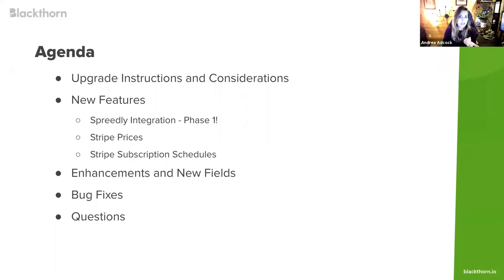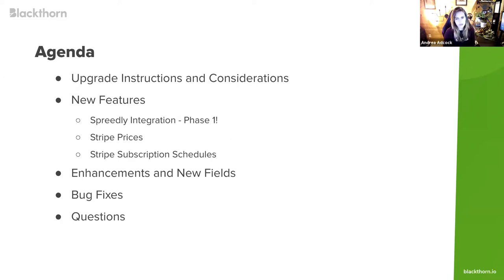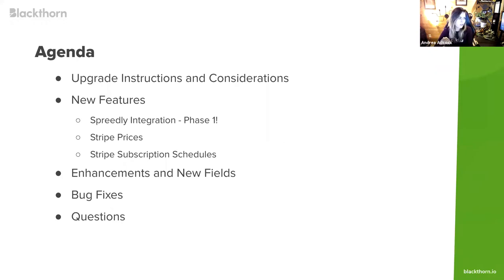For those not familiar with Stripe billing, it's a suite of tools to help companies automate and optimize recurring billing as well as one-off invoices. The two new Stripe billing features are Stripe Prices — Stripe now supports adding one-time prices to subscriptions in addition to recurring prices — and Stripe Subscription Schedules, which lets you automate changes to subscriptions over time. After new features, we'll cover enhancements, new fields, bug fixes, and then questions.